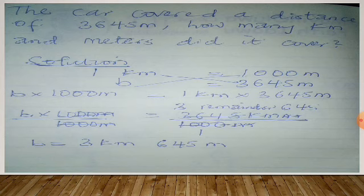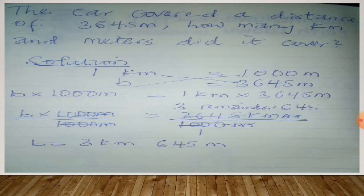The whole number represents your kilometers and the remainder represents your meters. So the final answer is b equals three kilometers 645 meters. If after going through today's lesson you have questions or doubts, please reach out in the comment section. Have a nice day, stay safe, and enjoy every moment. Bye!